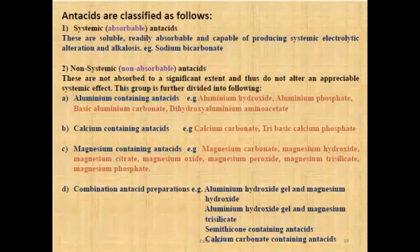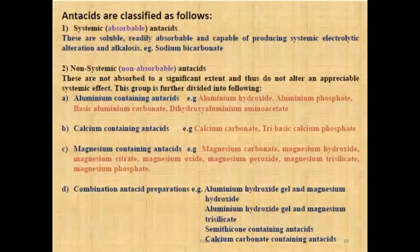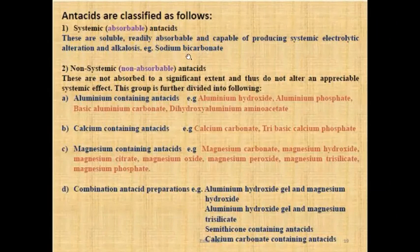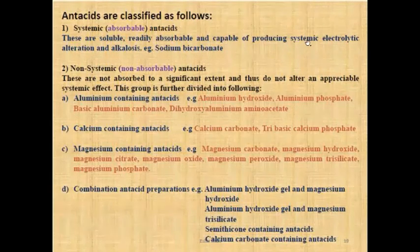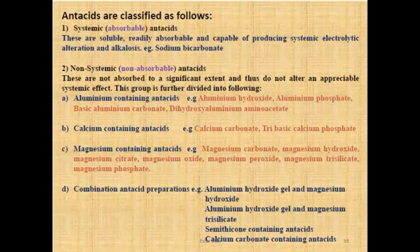The first class of antacids is systemic or absorbable antacids. These are soluble, readily absorbable, and capable of producing systemic electrolytic alteration and alkalosis. They circulate in the blood and wherever needed, they reduce the acidity content via alkalosis. An example is sodium bicarbonate.